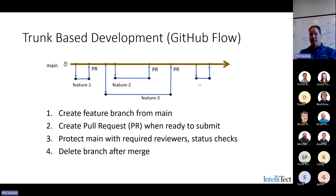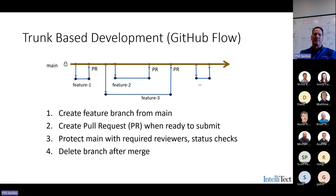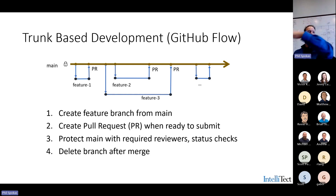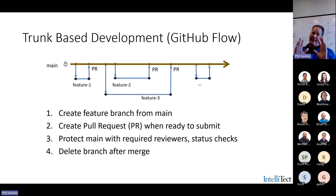We protect main so we don't want anyone pushing directly into main without some protection. And we delete the branch after merge. I just feel compelled to say that because I keep running into repos where there are hundreds of branches that nobody ever deletes. It's just a pointer, and when you open a list of branches and the list is longer than the page, it's probably a good sign you have too many branches.